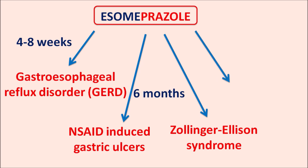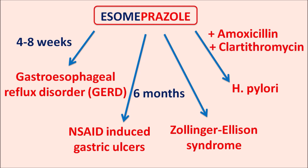S-omeprazole can also be used in the treatment of H. pylori infection. This drug does not directly reduce the H. pylori infection; it is only used to reduce the gastric acid secretion, so it is not used alone. It is combined with other drugs as triple therapy or quadruple therapy. In triple therapy, S-omeprazole is combined with amoxicillin, a penicillin antibiotic, and clarithromycin, a macrolide antibiotic. Care should be taken because the levels of S-omeprazole can be affected by clarithromycin, so doses should be adjusted on long-term treatment.